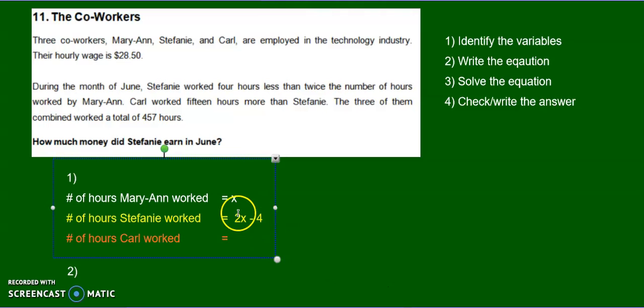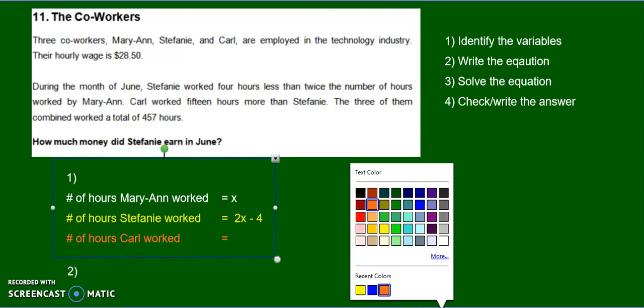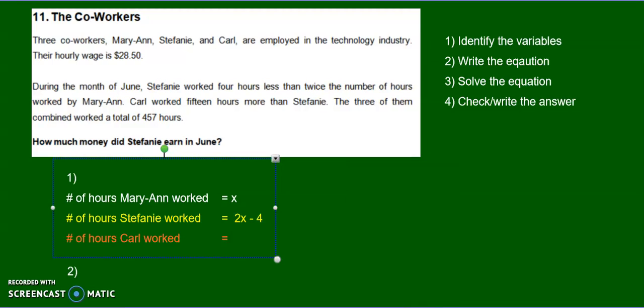Like that. So take away four from double. And then over here we have Carl. And it says Carl worked 15 hours more than Stephanie. So this is what Stephanie worked. So 15 hours more than that would be 2x minus 4. That's Stephanie.